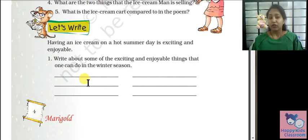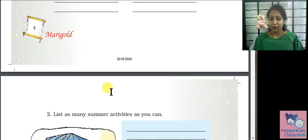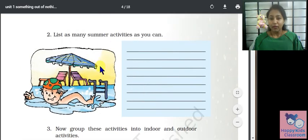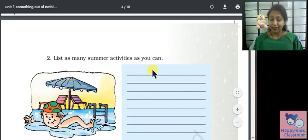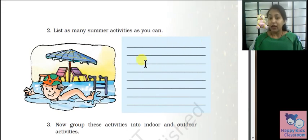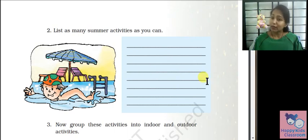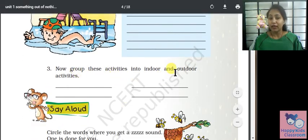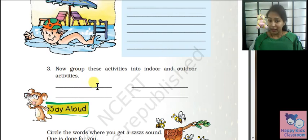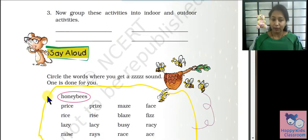In winter season you can write about activities like ice skating. List as many summer activities as you can — swimming, bicycling, playing video games inside the house, playing cards, trekking, and bicycle riding.